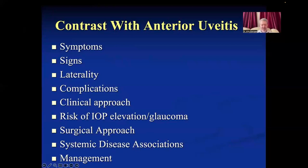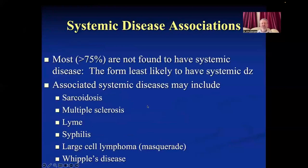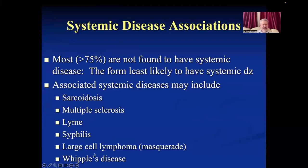Management differs because it's usually not susceptible to just eye drops. Most patients will not have systemic disease — intermediate uveitis is probably the form least likely to have associated systemic disease. If systemic disease is present, it may include sarcoidosis, multiple sclerosis (important to detect since it's now treatable), spirochete infections, primary vitreous or CNS lymphoma as a masquerade syndrome, or other infections like Whipple's disease.